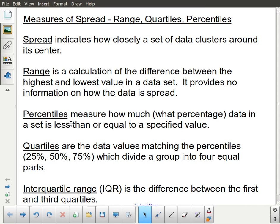You can see I've actually got on this first page just a list of definitions. So spread, that's basically the first broad idea that we want to look at. How closely a set of data clusters around its center. Range is the difference between highest and lowest values of the data set, so basically how broad is the span of the data.